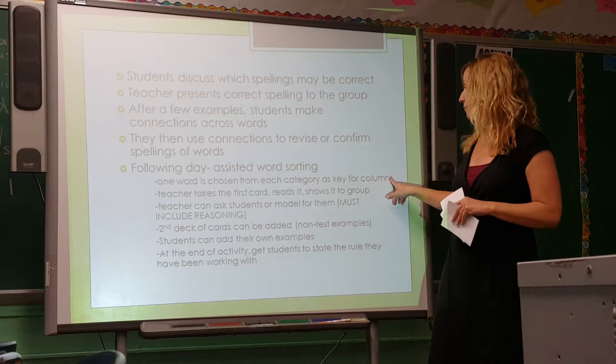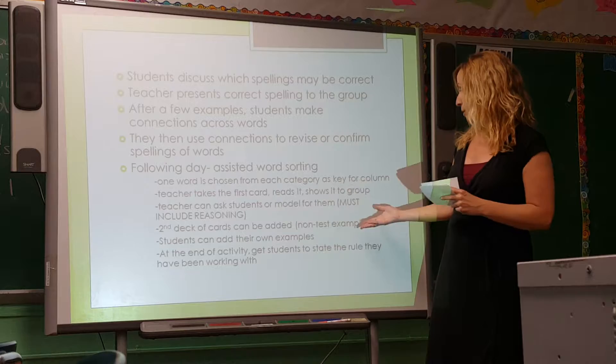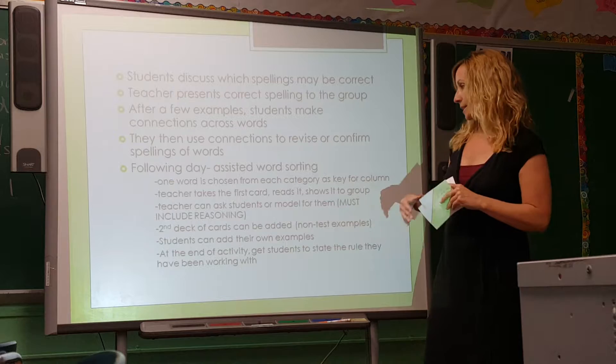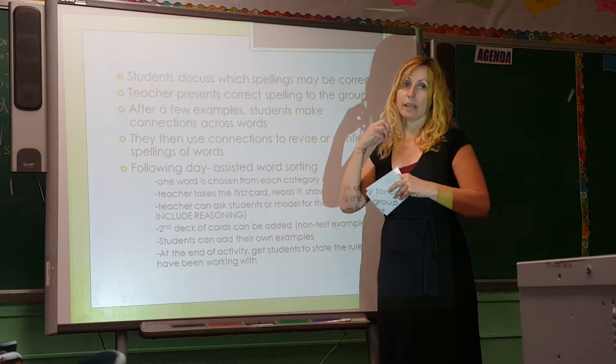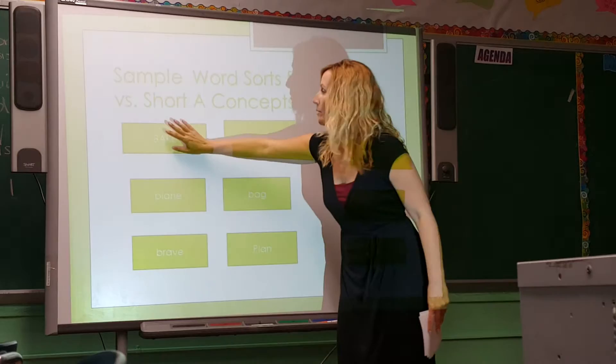In assisted word sorting, one word is chosen from each category as a key for each column. The teacher takes the first card, reads it, and shows it to the group. The teacher can involve students or model it herself. The most important thing is that you must include the reasoning — why did I put this card in this column? A second deck of cards can be added as non-assisted examples, and students can also add their own examples. At the end, the teacher wants students to state the rule they have been working with.